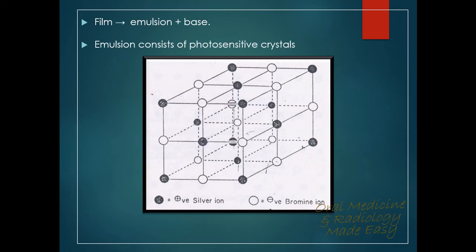To understand how latent images are formed, we need to know the basics of an x-ray film. An x-ray film consists of an emulsion and a base. The base is made up of polyethylene terephthalate, and the emulsion consists of silver halide crystals suspended in a gelatin matrix. Among the halides, bromine atoms are predominantly present, with some amount of iodine also present.